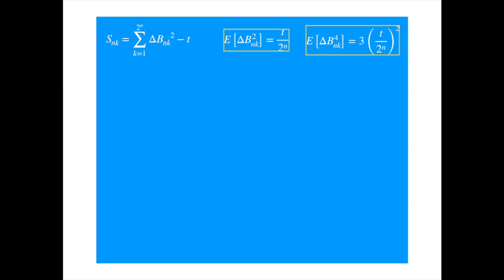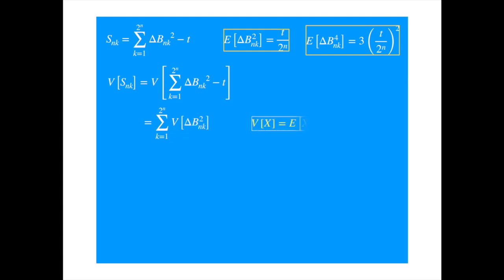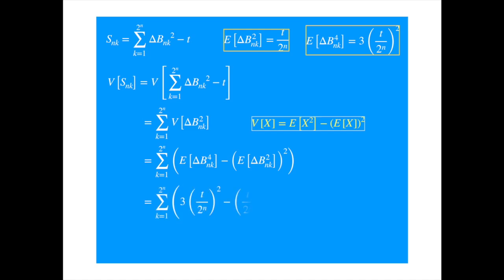Now let's calculate the variance. As the Brownian increments are independent, we can exchange the variance and sum. Applying the variance formula to the square of the increment, substituting the moments and simplifying, we get the variance of s.